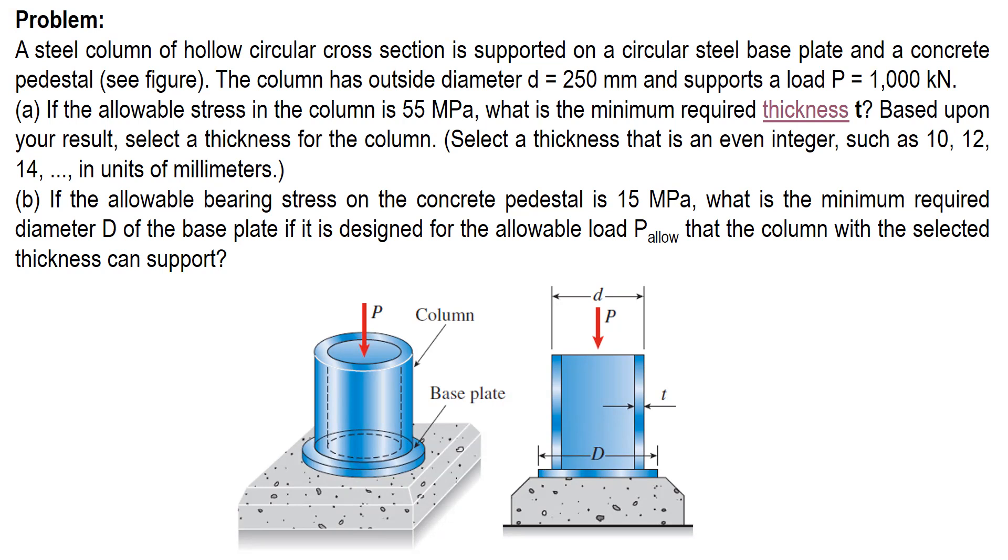A steel column of hollow cylindrical cross-section is supported on a circular steel base plate and a concrete pedestal as shown in the video. The column has an outside diameter of 250 millimeters and supports a load of 1,000 kilonewtons.